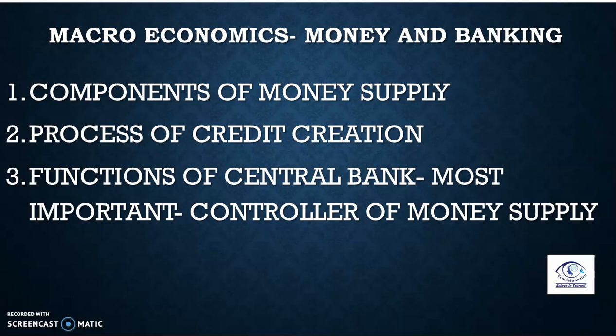The first function is currency authority, which you have to do properly. Then bankers bank and supervisor. Then government's bank. Many students get confused with bankers bank and government's bank. Bankers bank means the central bank is the bank for commercial banks — it gives that service to commercial banks, so commercial banks go to the central bank and open their accounts. Government's bank is different — that is your central and state government, so governments' accounts are also with the central bank. Bankers bank is a different point, whereas government's bank is different.